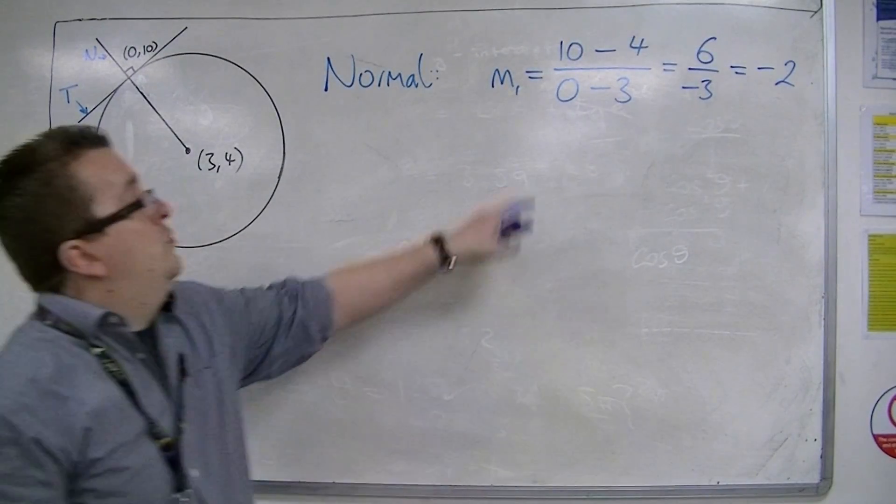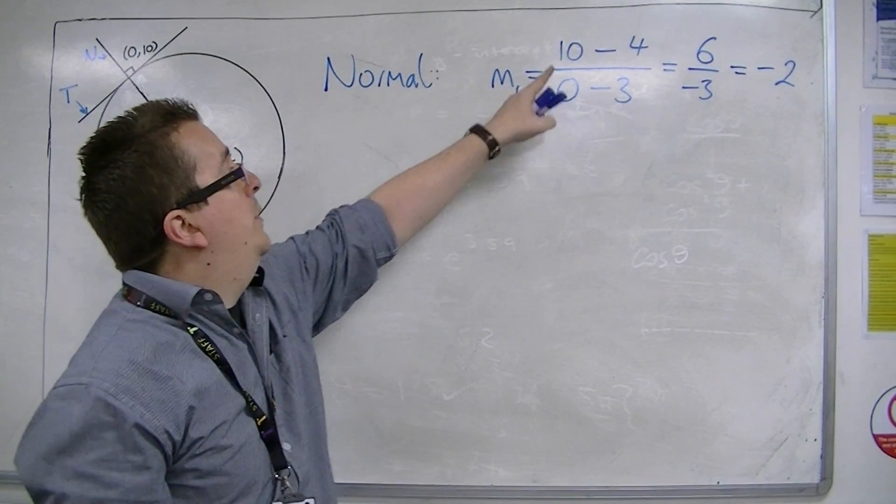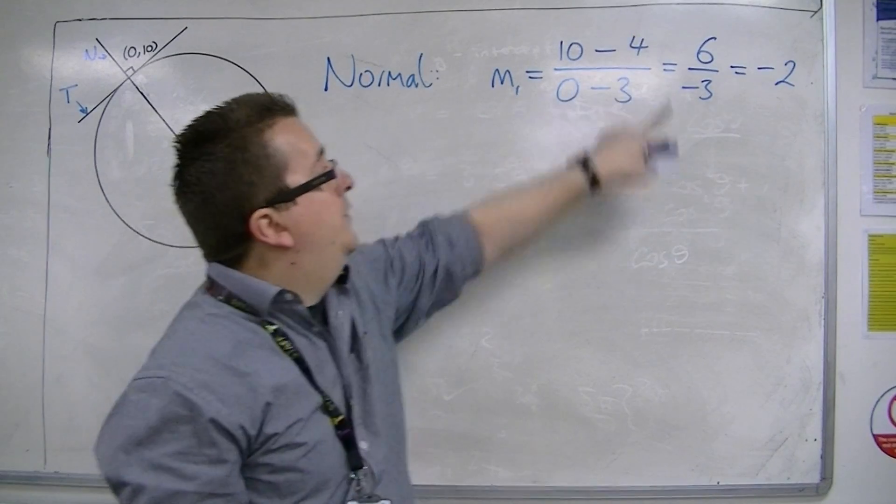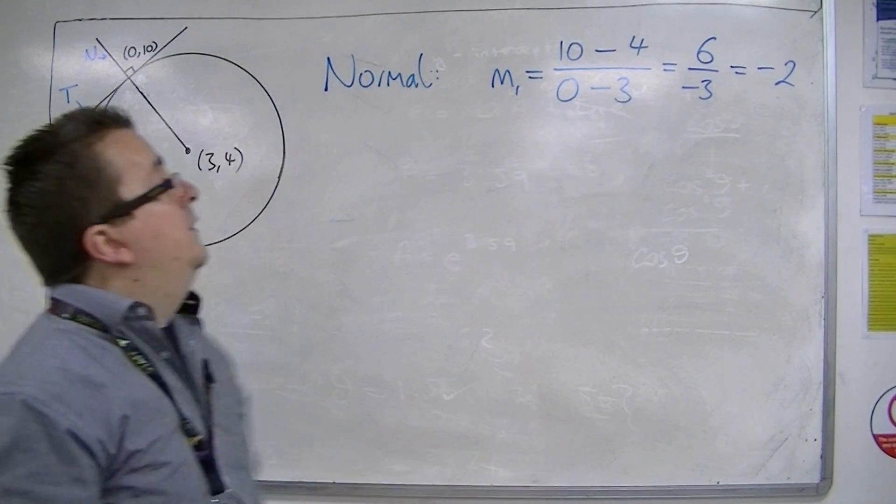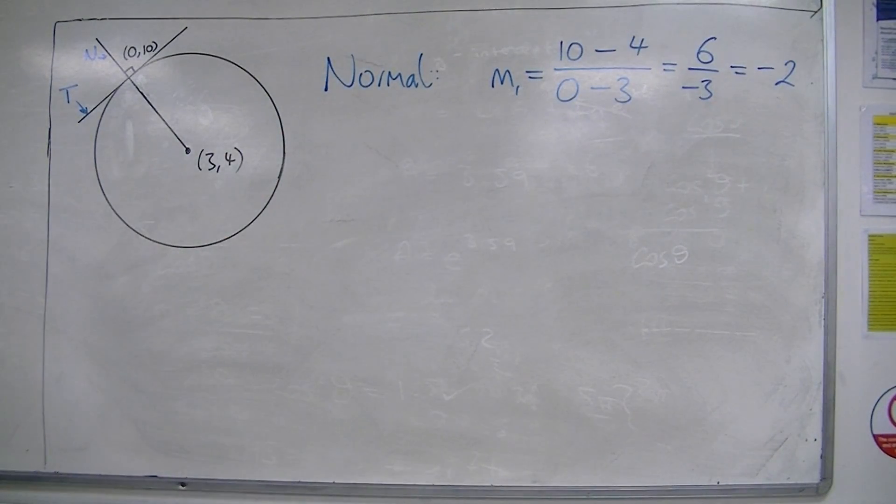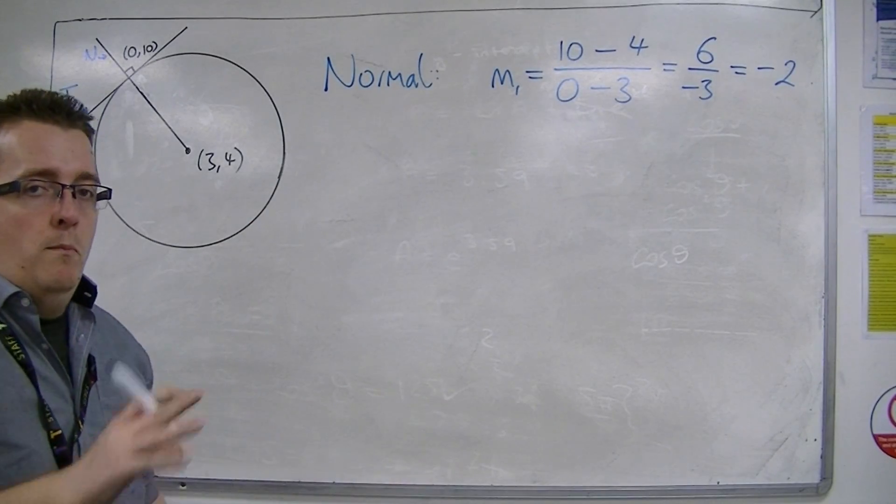Now, be careful making sure that these coordinates line up. So, I've got (0, 10) and (3, 4). So, that's the gradient of the normal, minus 2.